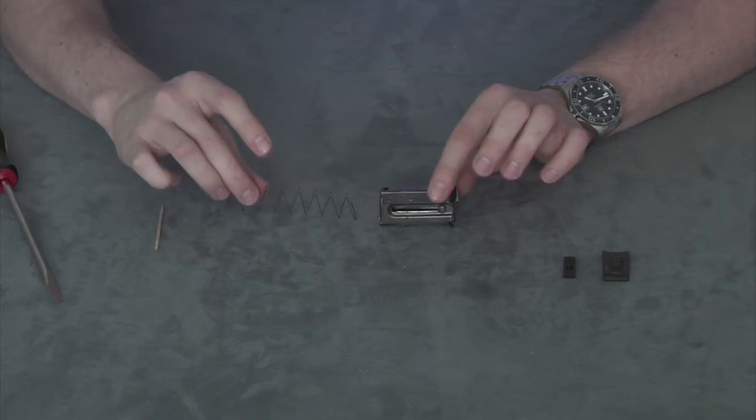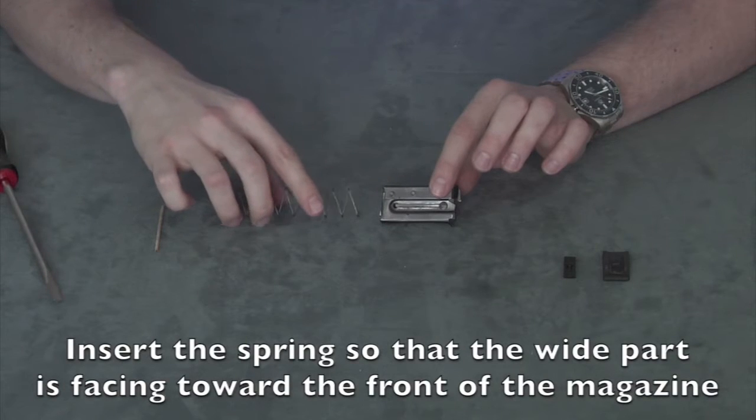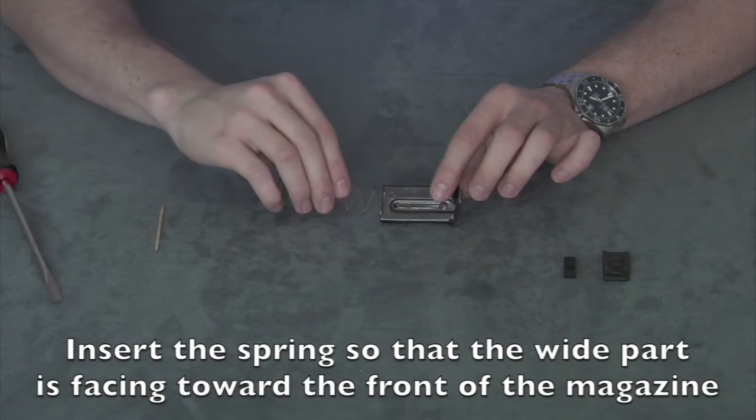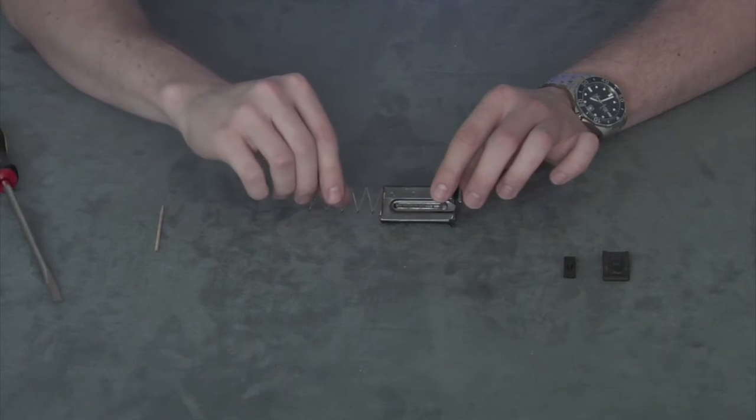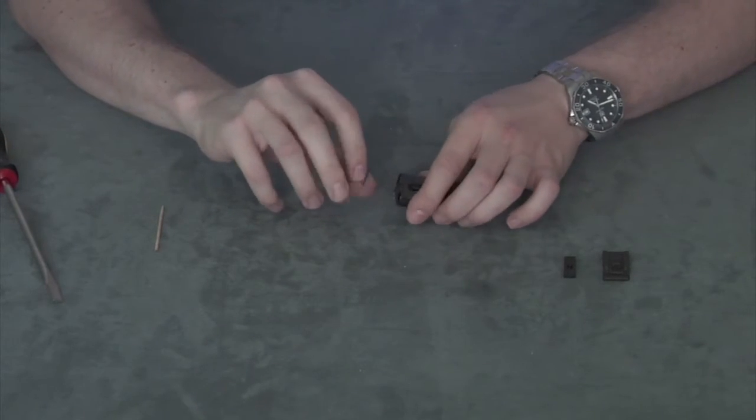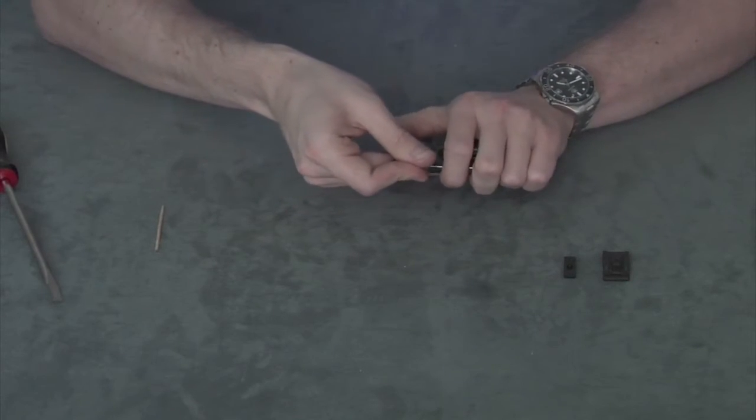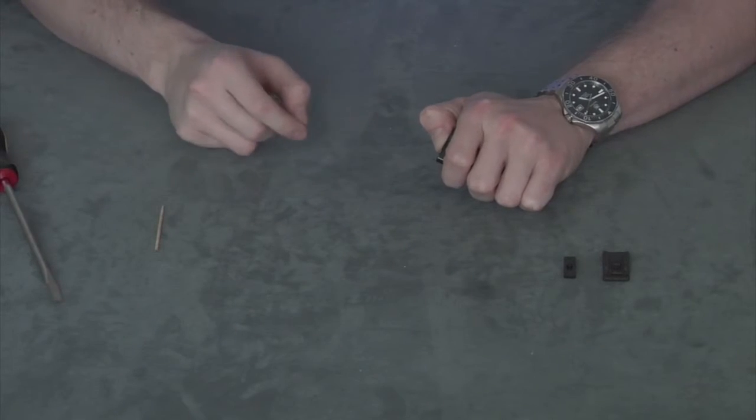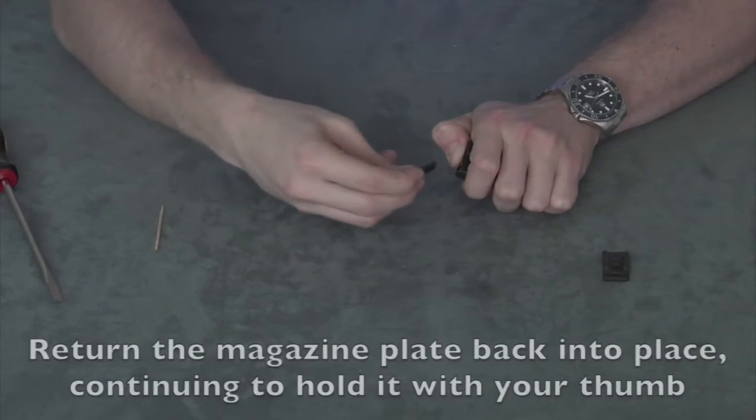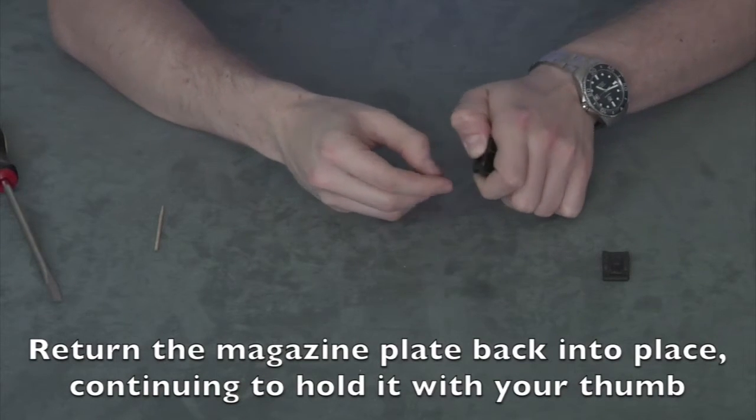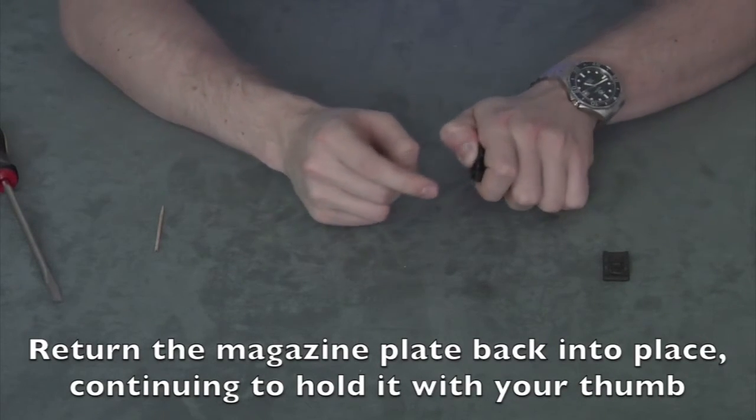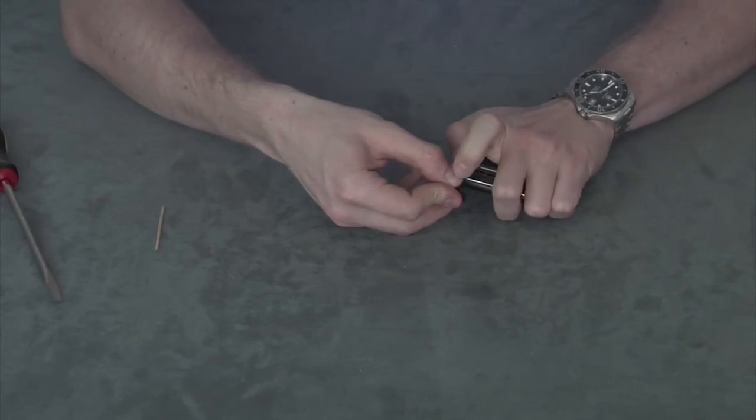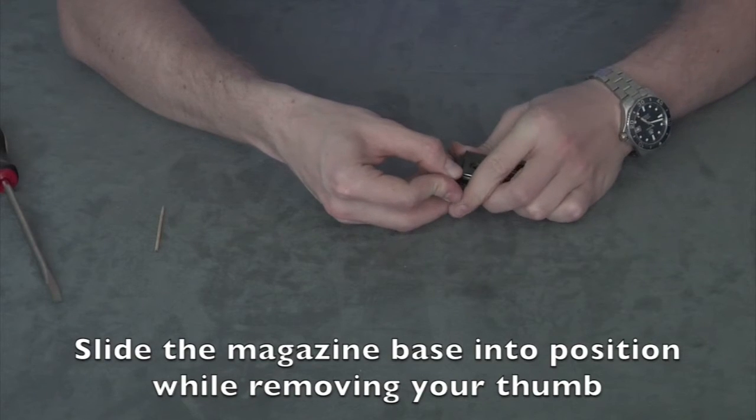To insert the magazine spring, make sure it is oriented with the wide parts facing forward. When putting it in place, use your thumb to hold it. Then take the plate and continue holding it in place with your thumb. Finally, slide the base on while removing your thumb.